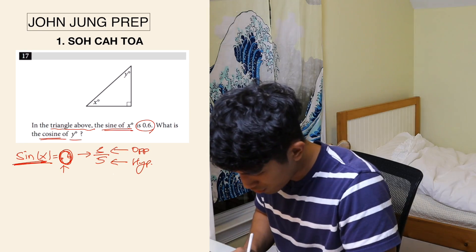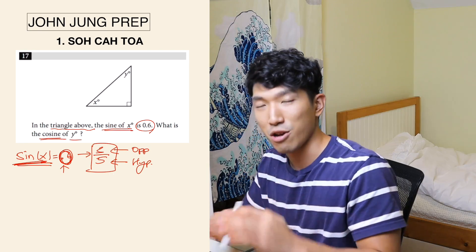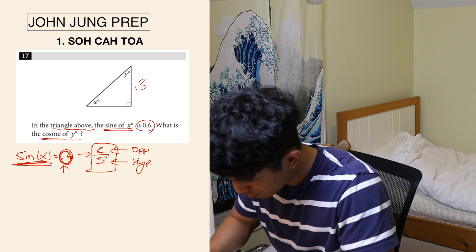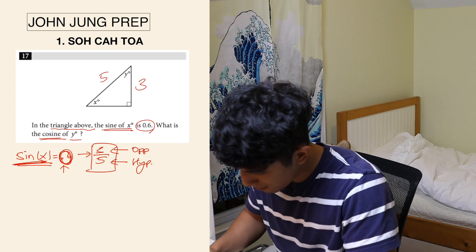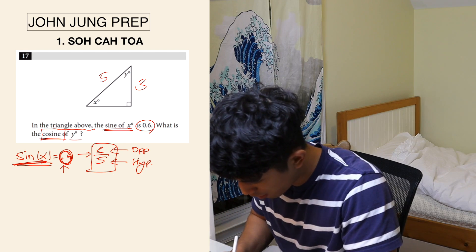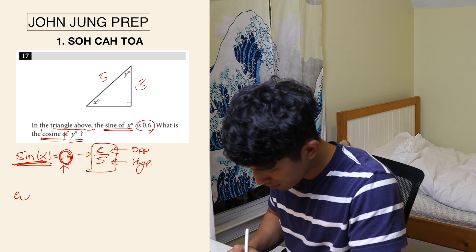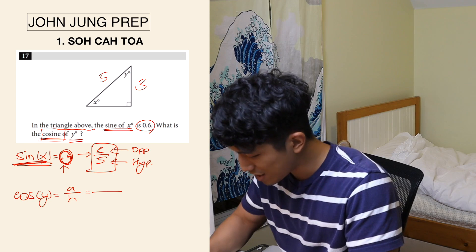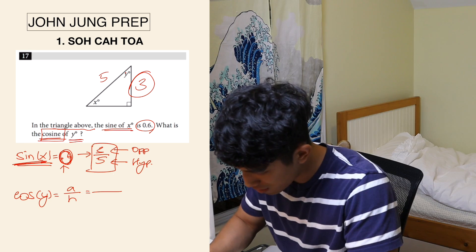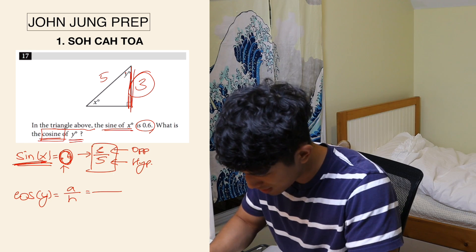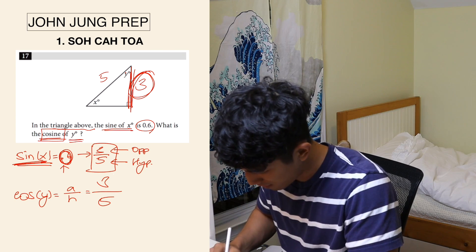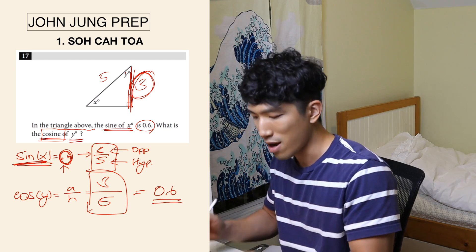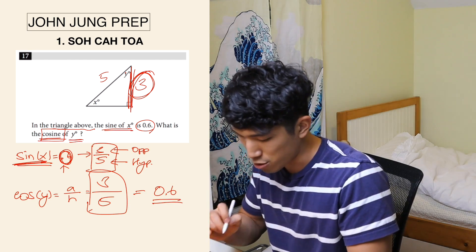So whenever you see that, always change to a fraction — it's going to make your life a lot easier. Sine of x is 3 over 5, so x is the angle, opposite is 3, and hypotenuse is 5. Cosine of y equals adjacent over hypotenuse. The adjacent of y is 3, and hypotenuse is 5. So the answer is 3/5, or 0.6 — they're the same thing. That's how the SAT asks about SOHCAHTOA.